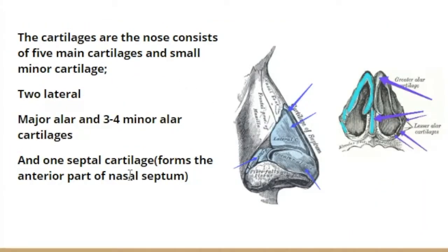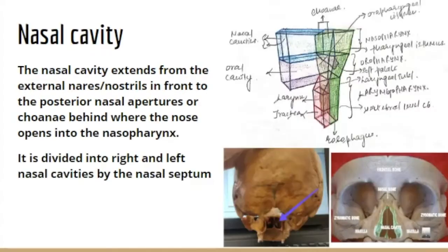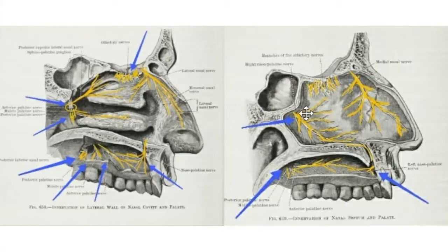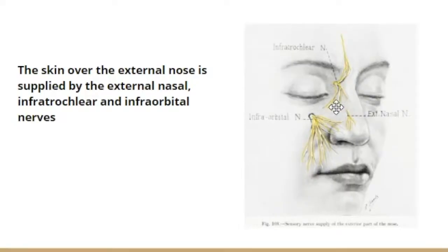Coming to the innervation of the external nose, it is supplied by two branches from the maxillary nerve and one branch from the ophthalmic nerve, both of which are branches of the trigeminal nerve. The branches from the maxillary nerve are the infraorbital and the infratrochlear, and the branch from the ophthalmic is the external nasal nerve. The external nasal nerve is a branch of the anterior ethmoidal nerve, which is itself a branch of the ophthalmic nerve. The anterior ethmoidal supplies both the lateral wall and the nasal septum, then travels between the nasal bone and the lateral cartilage to emerge on the face as the external nasal nerve.